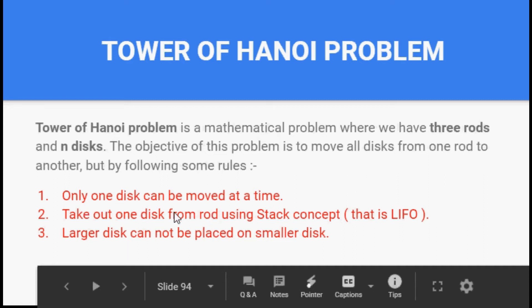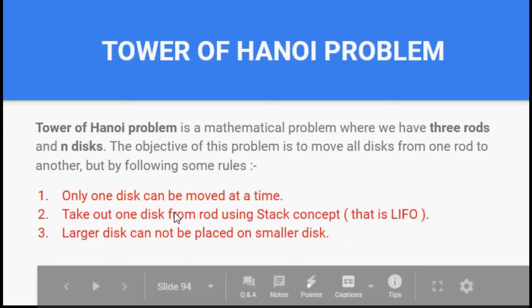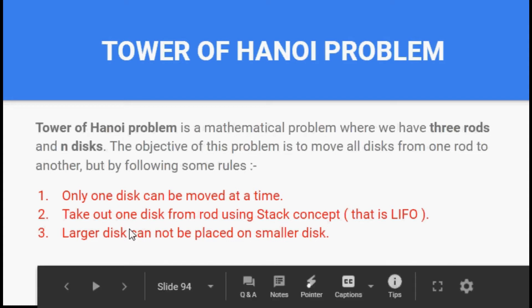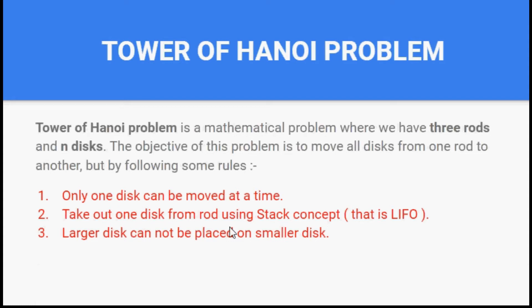The first rule of Tower of Hanoi is that only one disc can be moved at a time. For example, if I have five discs in one rod, I cannot move all the discs at the same time. I need to pick one disc from the rod, make the transfer, then pick another disc and keep on doing this until I am done.